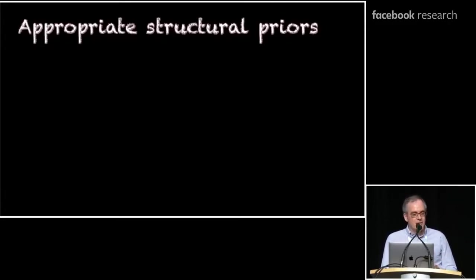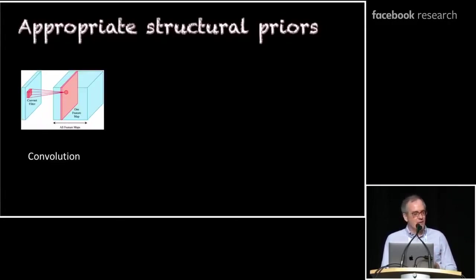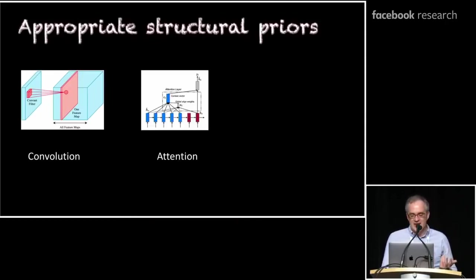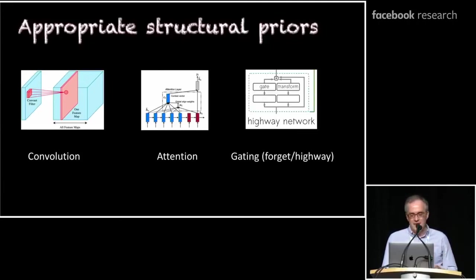These successes include the early success of convolutional neural networks, the development of attention, and also the kind of sequential and vertical gating that's used in LSTM forget gates and highway networks. All very effective structural biases.